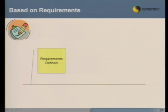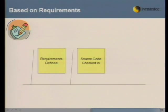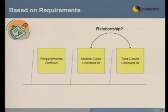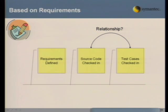For associating source code and test cases based on requirements: requirements are going to be defined, probably by product managers or lead engineers. Source code is checked in to fulfill those requirements, and test cases are checked in to fulfill those requirements as well. So you can assume there's going to be some relationship between those two pieces of information. Later, when source code is checked in, you can say — based on this relationship — most likely we should be executing these test cases, because they're associated with the source code through these requirements.